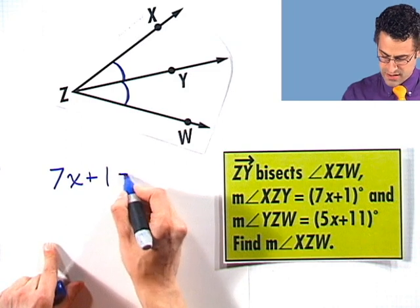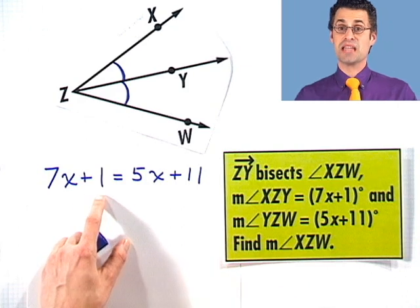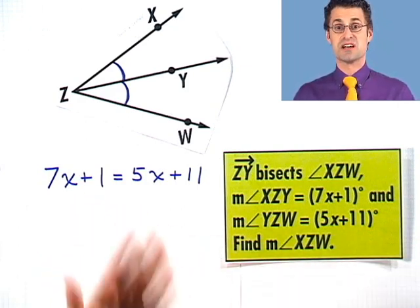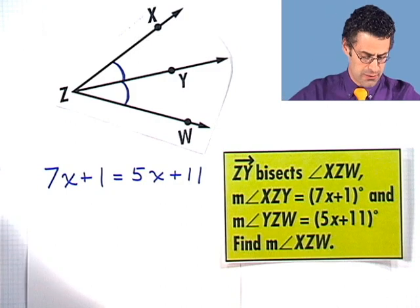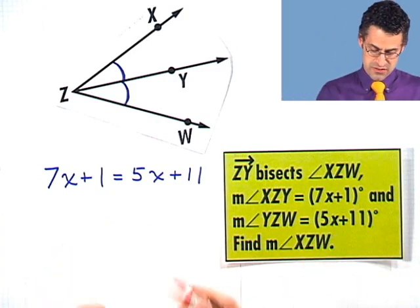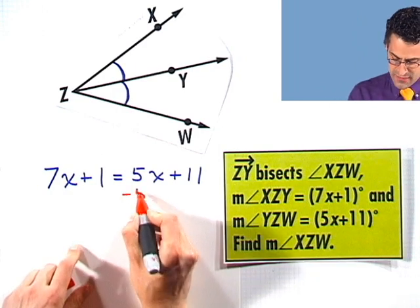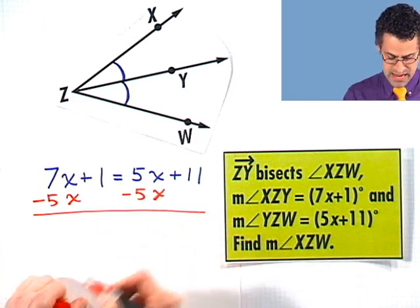7X plus 1 equals 5X plus 11. That's now a connection that's going to allow me to use algebra to actually resolve this and find X. So let's try to do that. The first thing I want to do is try to get all the X together onto one side, so I have X equals. So I'm going to subtract 5X from the right, which forces me to subtract 5X from the left to keep everything perfectly balanced.